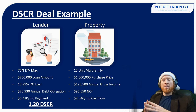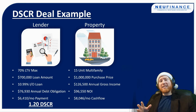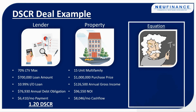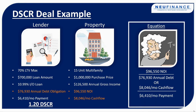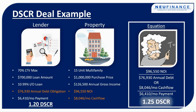Now that we have the debt service requirement from the lender and we know what they're willing to give us, we have enough information to do the equation. The equation looks at the net operating income divided by the annual debt obligation to give us the Debt Service Coverage Ratio. You can also divide the monthly cashflow by the monthly payment — both equations give the same answer. This property, based on the terms, will debt service at 1.25, which means the borrower qualifies for the loan and can move forward with underwriting.